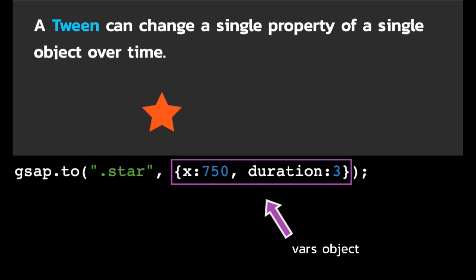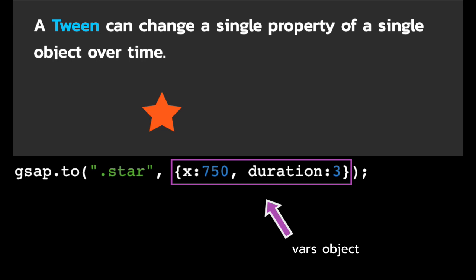Next we have the vars object, which is going to contain the properties that we're animating, and a series of special properties that might tell us how the tween is going to run. Duration is considered a special property because it's not a property that's being animated. It simply defines how long the tween is going to run. We'll get into a bunch more special properties real soon. Right now we're just going to move this star along the x-axis, 750 pixels, with a duration of 3 seconds.